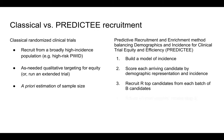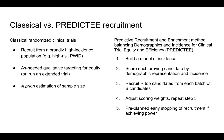Our novel recruitment methodology, which we call the Predictive Recruitment and Enrichment Method Balancing Demographics and Incidence for Clinical Trial Equity and Efficiency, or just PREDIC-D for short, improves on this classical recruitment methodology by implementing a predictive model and scoring system that improves the incidence of the recruited cohort, thereby reducing required sample size, while simultaneously improving the demographic representativeness of the trial cohort. Our dynamic scoring system for candidates, which takes into account infection risk and demographic constraints, ensures that both factors are considered in recruitment, and allows weights to be changed to gradually place greater consideration on demographics or incidence as the trial progresses.